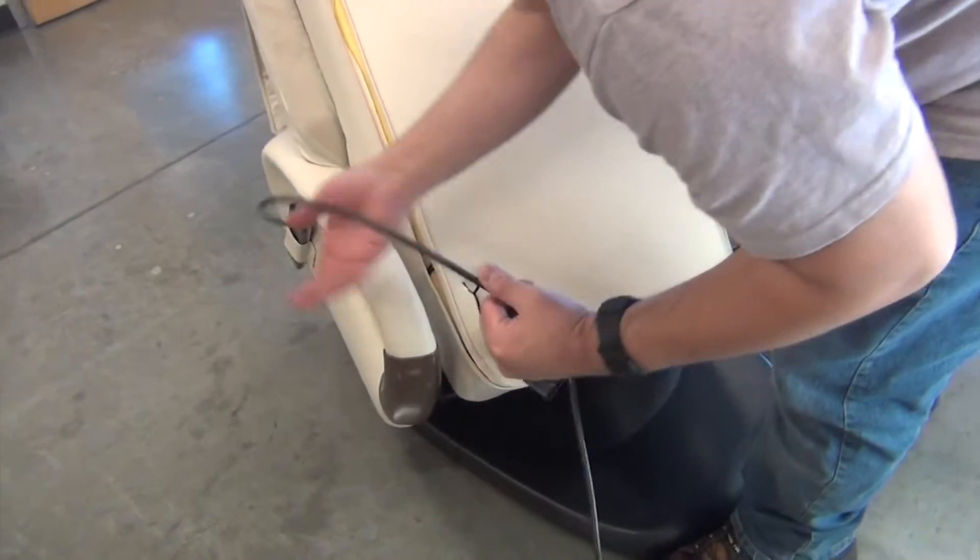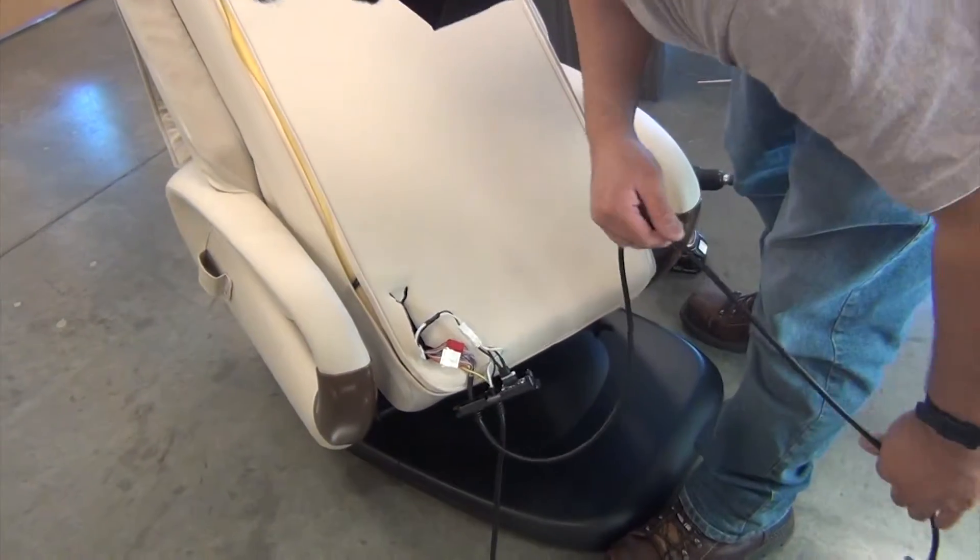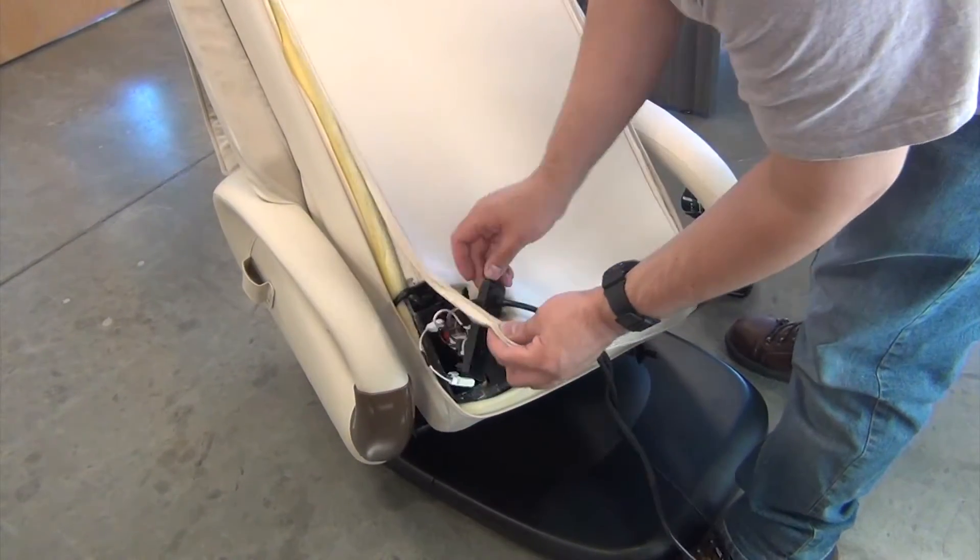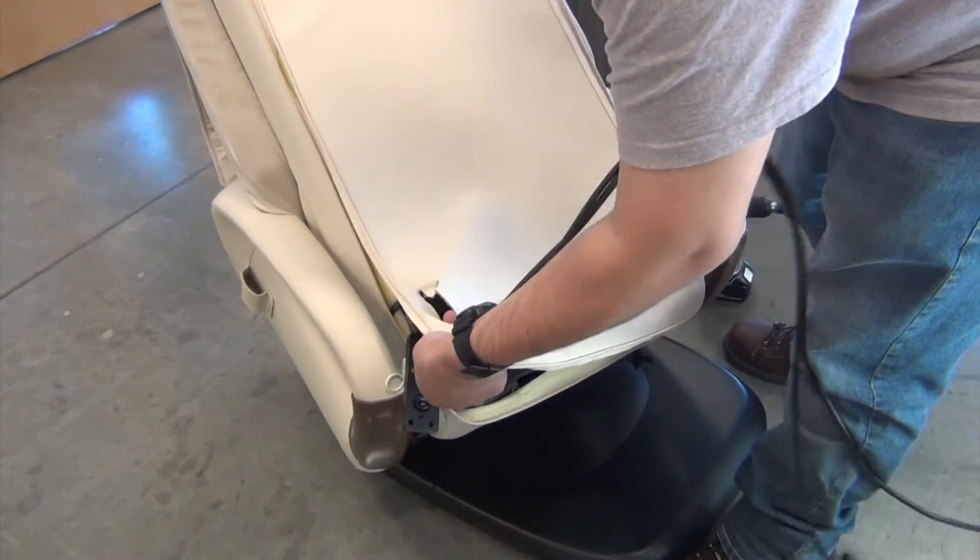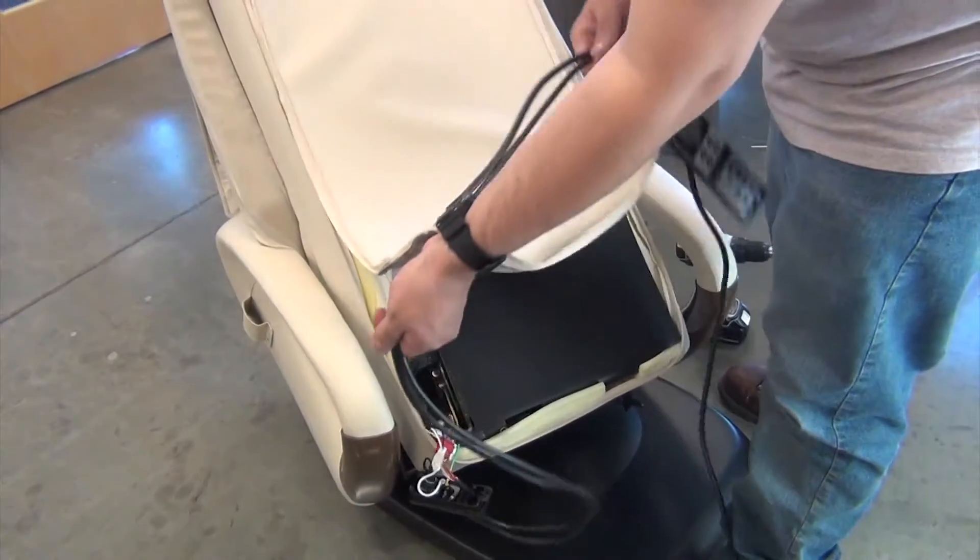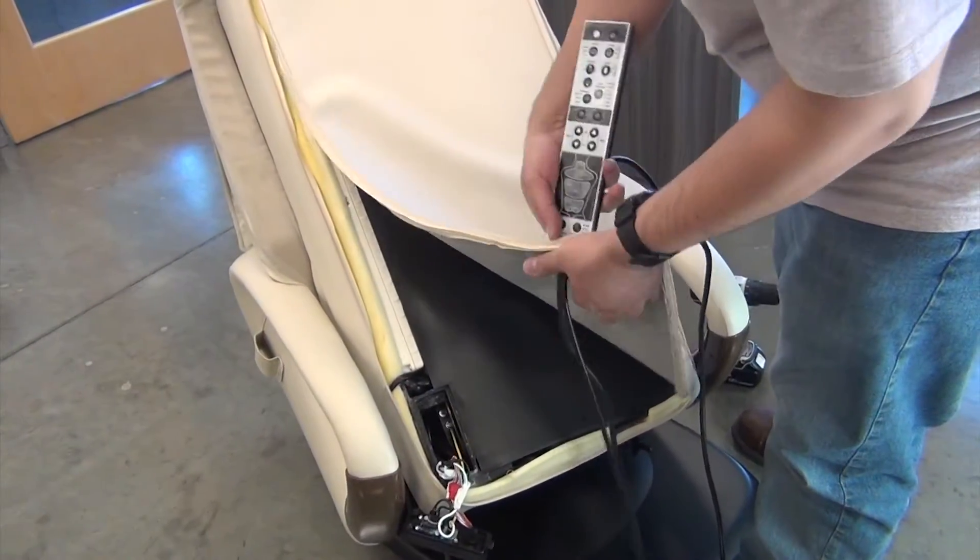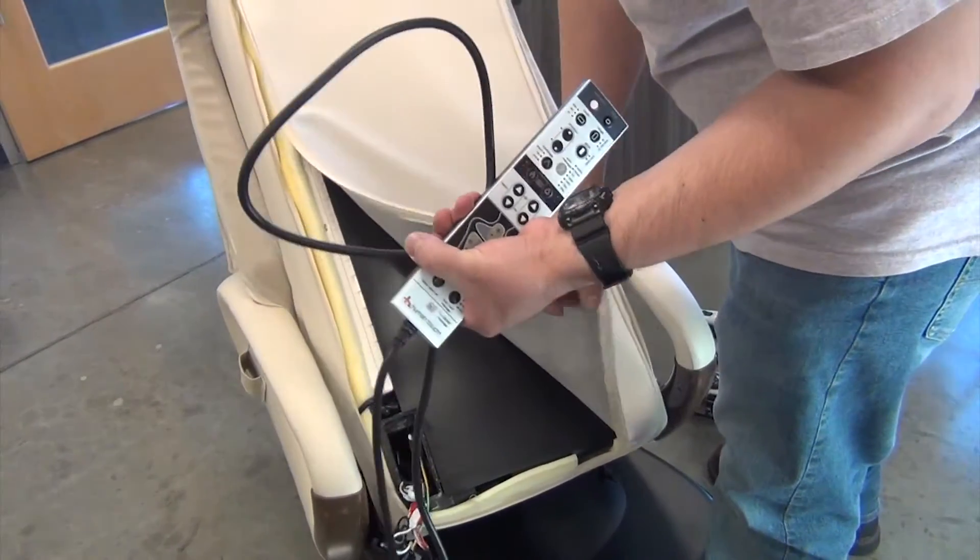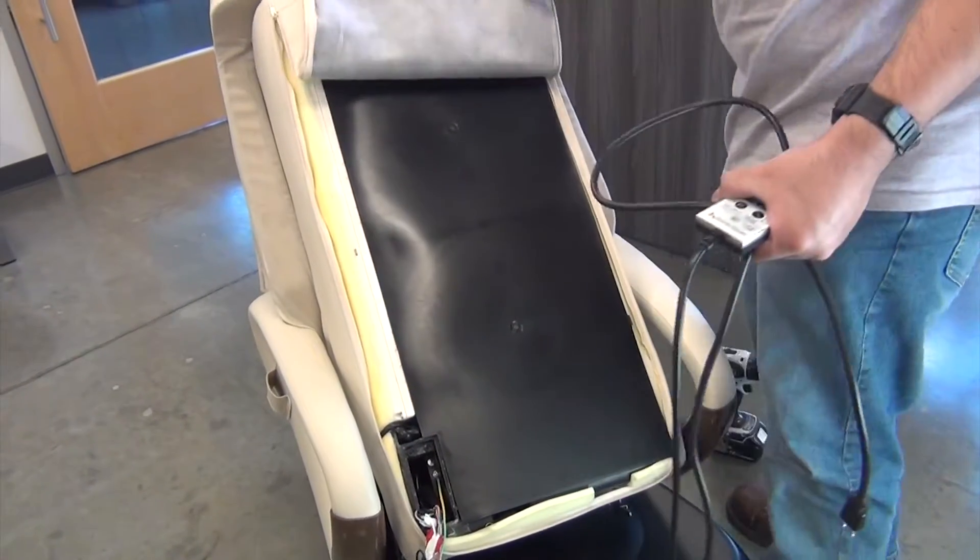Now, feed the power panel, remote control and power cord through the hole in the backrest upholstery. Flip the backrest upholstery over the backrest.